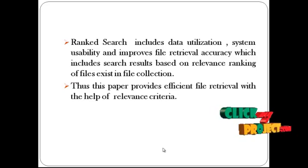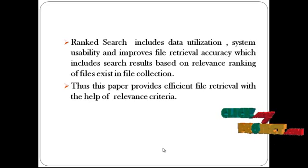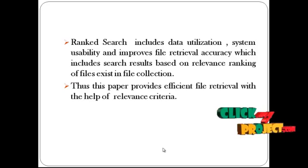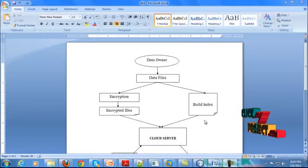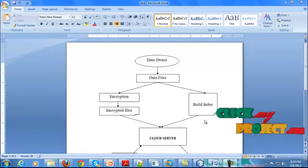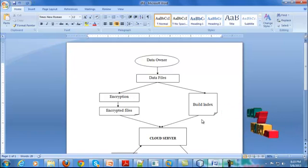We have secured outsourcing of data through the ranked keyword search. Next, we are going to see the process flow. This system always accounts for three things: the data owner, the user, and the cloud server.